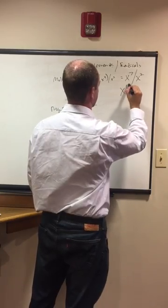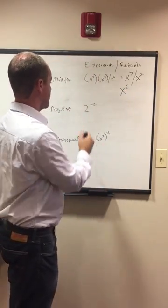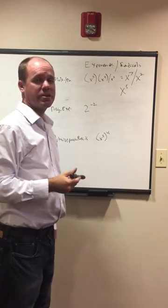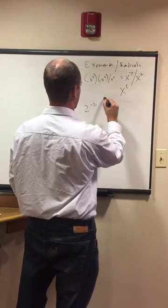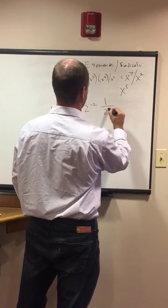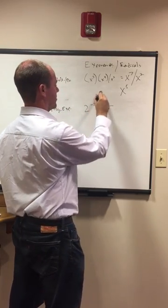Second problem: two to the negative two. When we see that, we need to put it one over two squared. So we just make this positive, put a one over whatever the number is, and that equals one fourth.